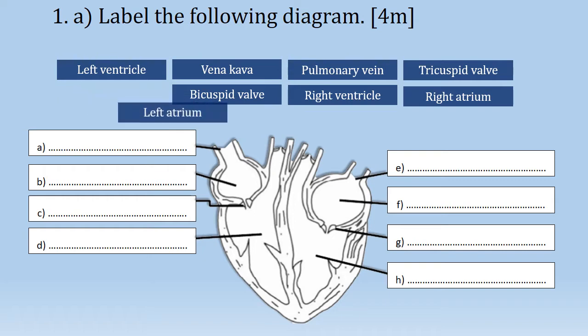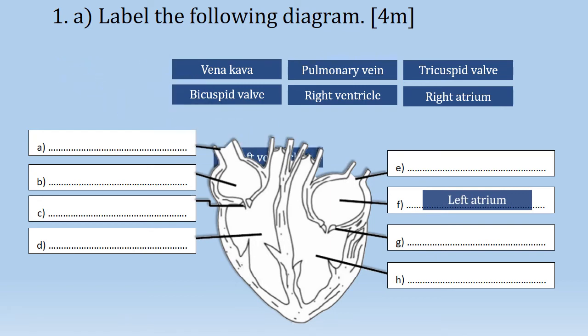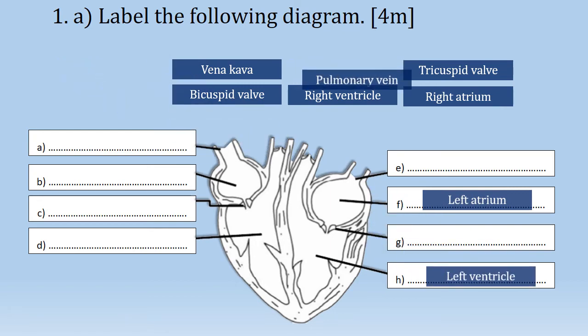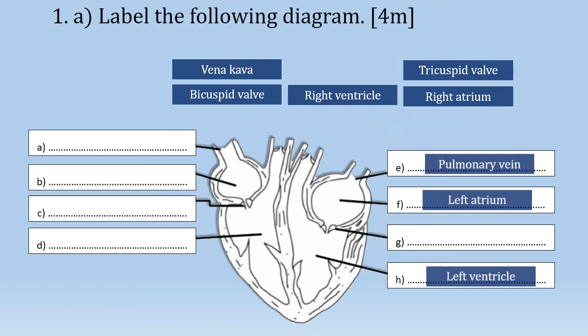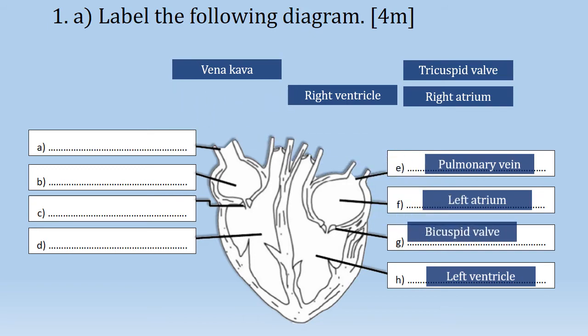The upper chamber is the left atrium, meanwhile the lower chamber is the left ventricle. This is the pulmonary vein, where the oxygenated blood enters the left atrium through it. Between the left atrium and the left ventricle is the bicuspid valve, to allow blood to flow only in one direction.